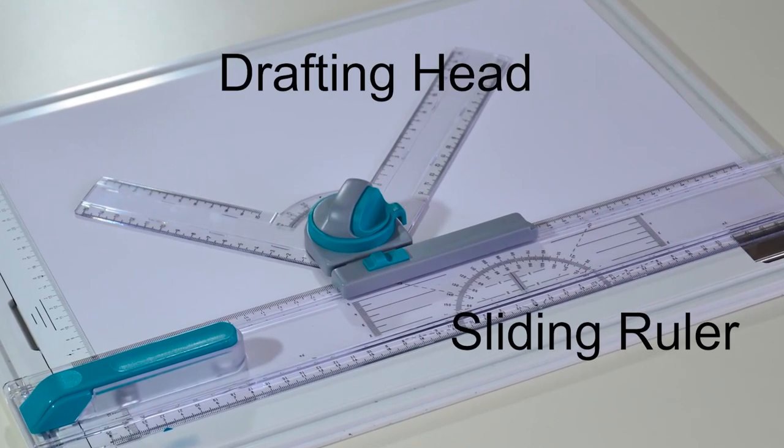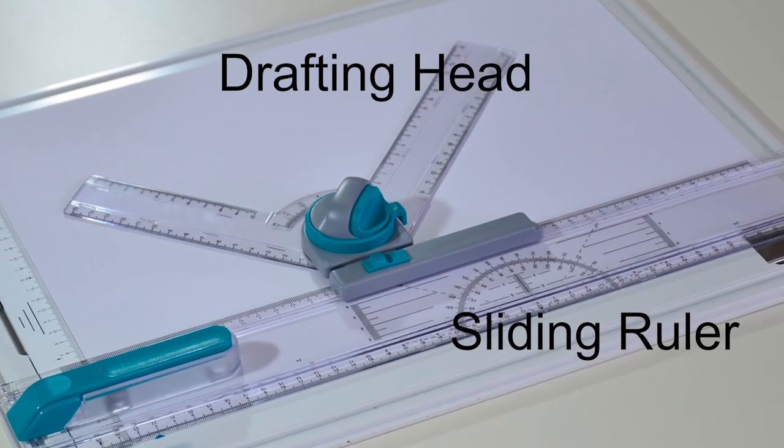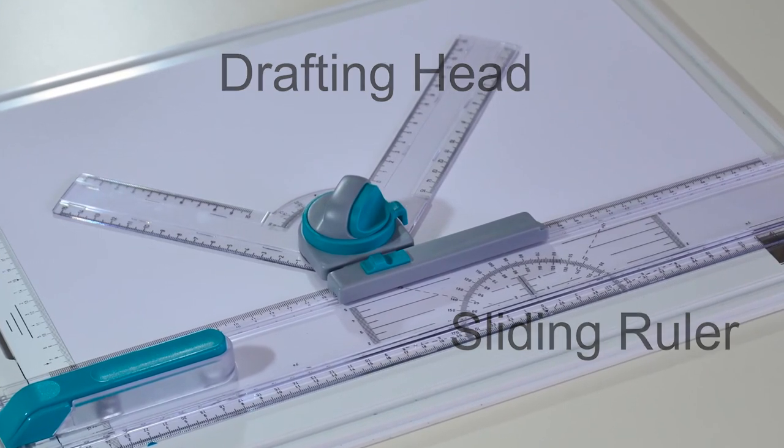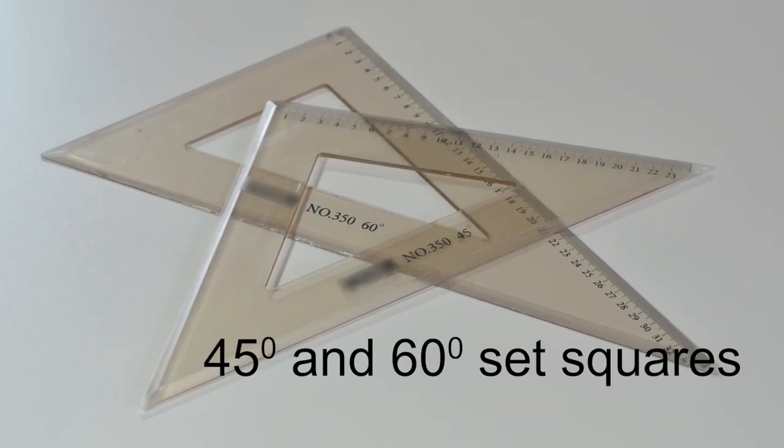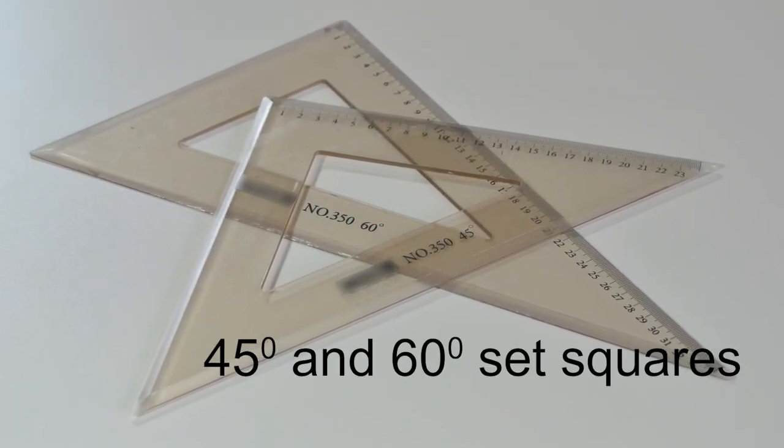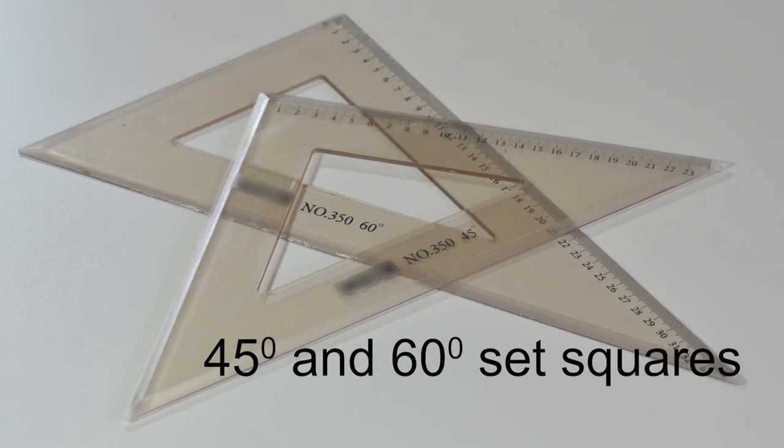Just make sure it has a sliding ruler and a drafting head. If you are using a wooden board, you also need a pair of set squares. Those are optional if you are using a plastic board, but they are highly recommended.